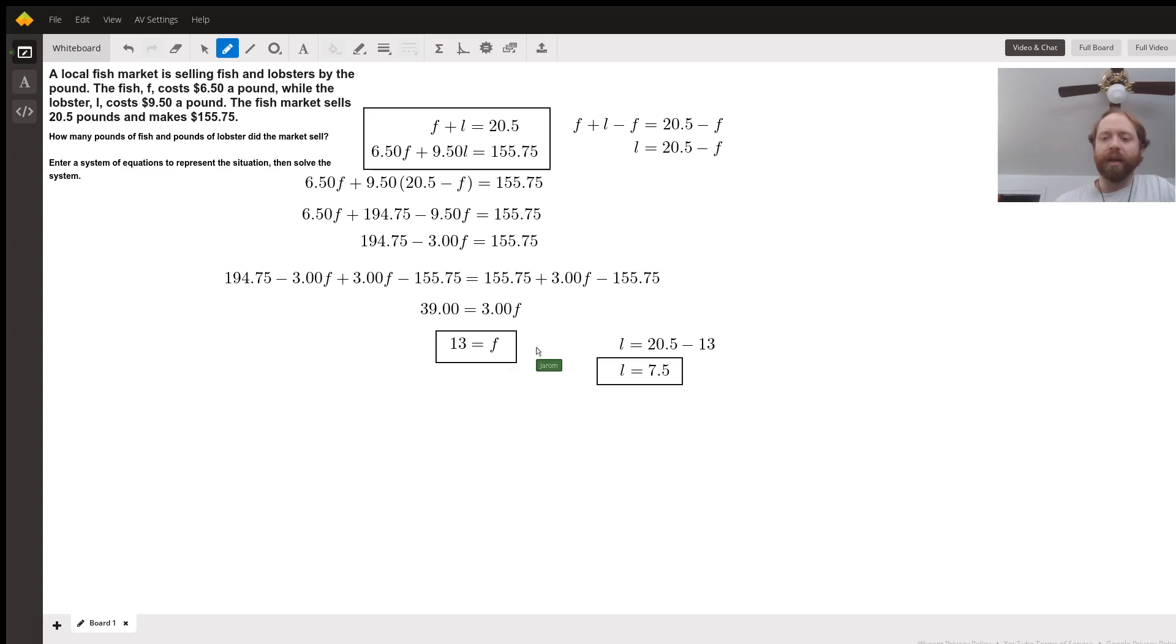Then we're going to substitute that back into this L equals 20.5 minus F. So L equals 20.5 minus 13. We have L equals 7.5. Once we're to that point, that should be our solution.